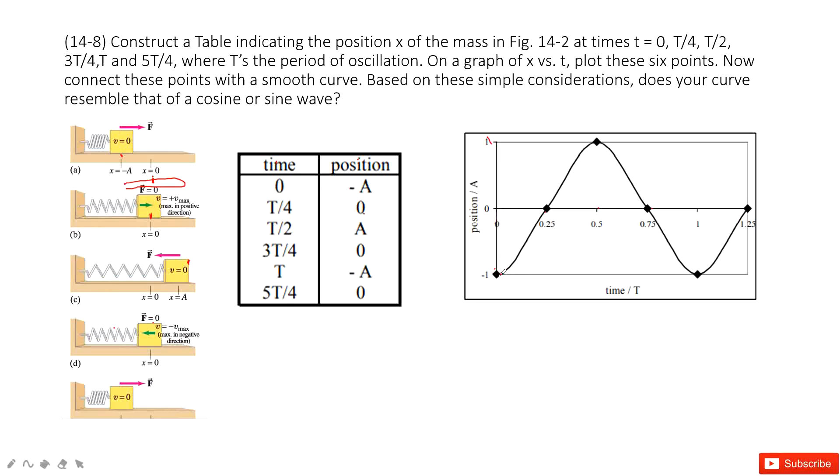We just use this table. Initially it's 0, negative A is there. Then at a quarter of T it's 0, half of T is A, and three-quarters of T is 0, and at T it becomes negative A. When we plot it, we find it is a cosine curve.